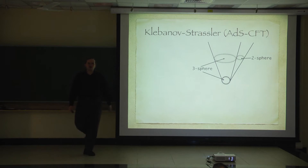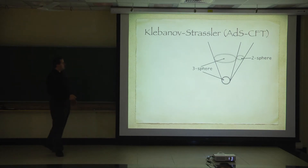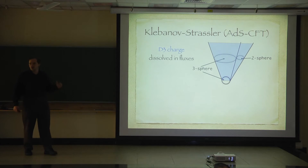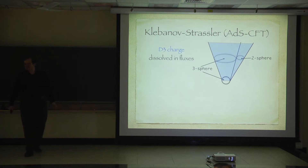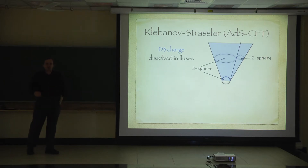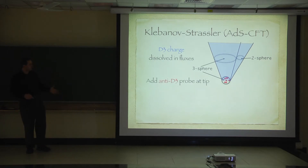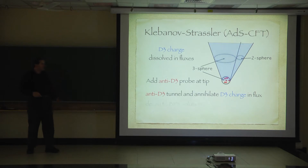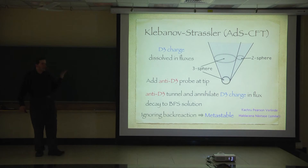How about AdS-CFT? Can we do better? People have taken the Klebanov-Strassler solution, which is dual to a four-dimensional confining gauge theory. In AdS-CFT you can construct the Klebanov-Strassler solution, which has three-brane charge dissolved in the fluxes. If you put anti-branes at the bottom of the solution, they can actually tunnel and dissolve against the charge in the fluxes, giving you a BPS solution. Ignoring back-reaction, this is argued to be a metastable solution.